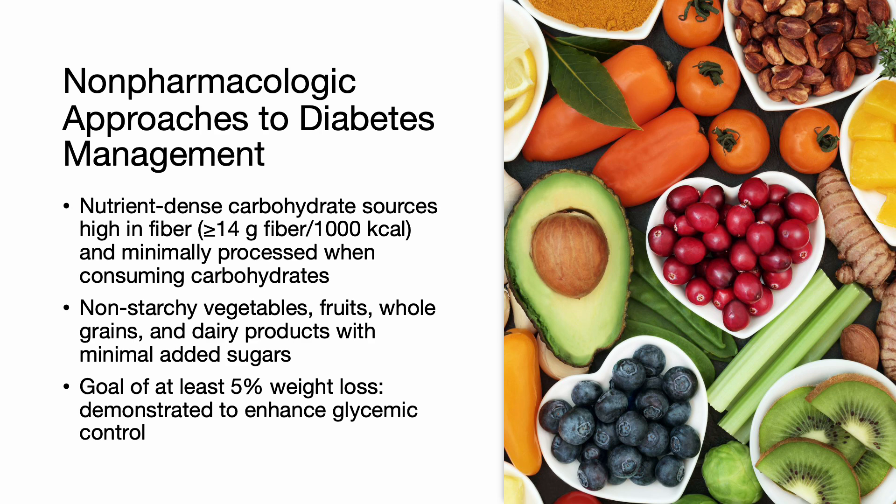The ADA advises prioritizing nutrient-dense carbohydrate sources high in fiber and minimally processed. Eating plans should highlight non-starchy vegetables, fruits, whole grains, and dairy products with minimal added sugars. For patients with overweight, obesity, and type 2 diabetes, aiming for at least 5% weight loss is recommended, as it has been demonstrated to enhance glycemic control. However, achieving desired outcomes may require weight loss of 10% or more.